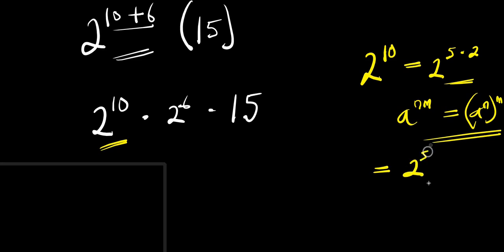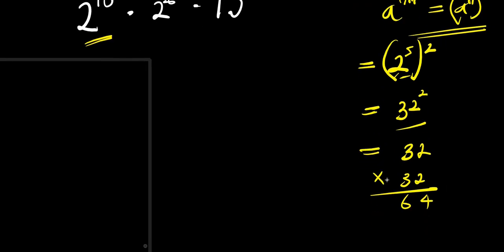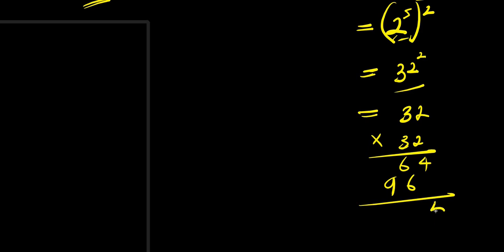We have 2 to the power of 5, to the power of 2. And 2 to the power of 5 is simply 2 multiplied five times, which is 32. This is raised to the power of 2. So this is 32 times 32. Two times two is four, two times three is six. Three times two is six, three times three is nine. Adding together: this is 4, this is 12 — carry 1 — one zero two four.